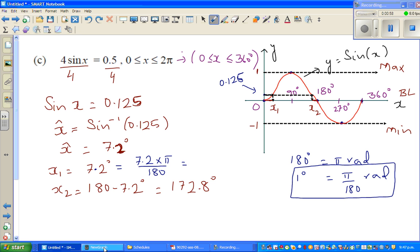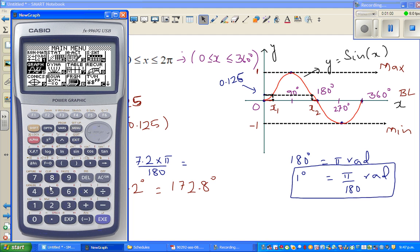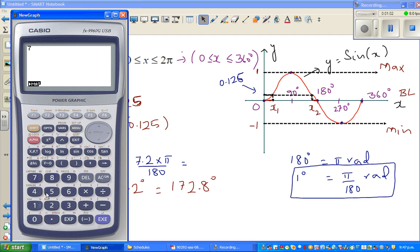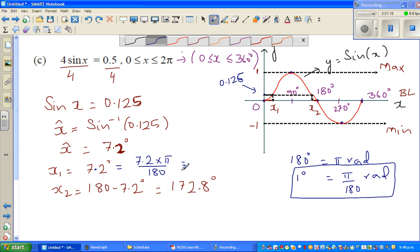Let me show you on a calculator. Basically you go 7.2π divided by 180, which is 0.12 or 0.13 in 2 decimal places. And this is same as 172.8π over 180. You can do that yourself now. Moving on to this question.